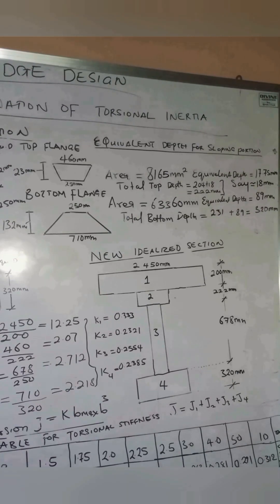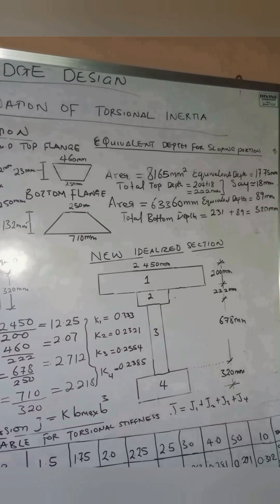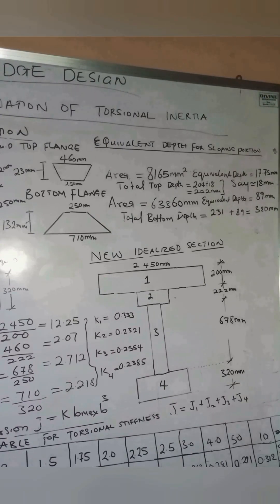For the composite section, the thickness of the in-situ slab is 200 mm. At the bottom of the I-section, the same procedure is applied. The area of the trapezium with sides 250 mm by 710 mm and height 132 mm gives an area of 63,360 mm². The equivalent depth becomes 89 mm, and the total depth of that section becomes 320 mm.